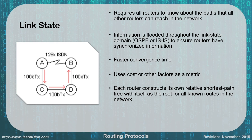Each router constructs its own shortest path tree with itself as the root for all known routes. So A would determine that the fastest way to reach B is A, C, D, B. B might determine its fastest path to A is B, D, C, A. If C wants to get to A, it goes directly. If C wants to get to B, it goes C, D, B. Each router figures this out based on the link states it understands.